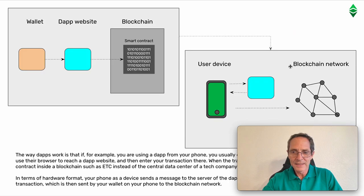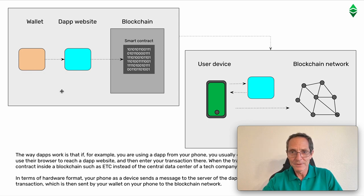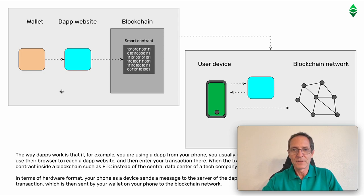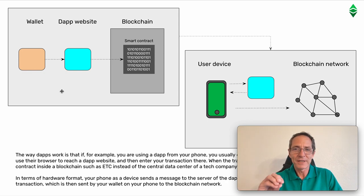In the future, it's very likely that you'll have the Uniswap website app directly on your phone, and many other dApps directly on your phone instead of going through the wallet — or both formats will exist. So if you use a dApp like Uniswap directly from your phone, you enter the transaction, and when you press send, it's going to ask MetaMask to sign the transaction because your private keys are in your crypto wallet, not in the dApps themselves.